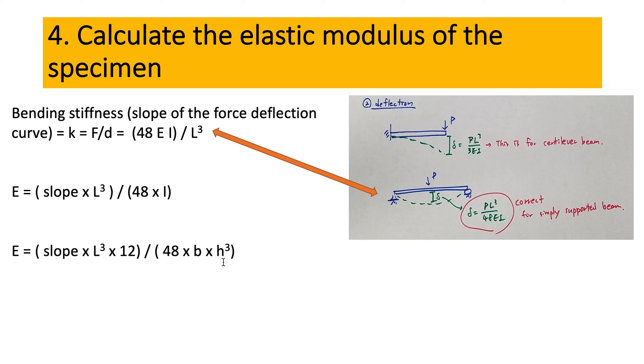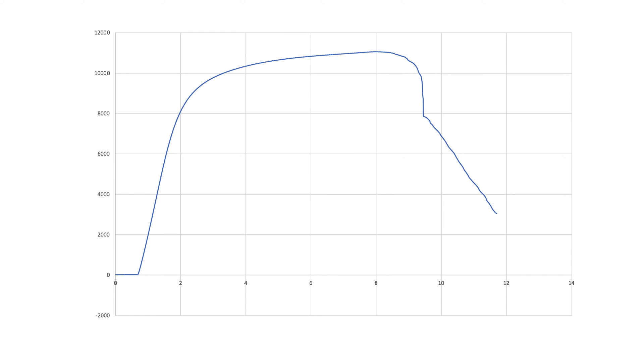B is the width of the specimen and H is the thickness of the specimen. The elastic modulus is related to the slope of the data that we have here, but it's a little bit different from the compression and tension in the sense that you need to do this,